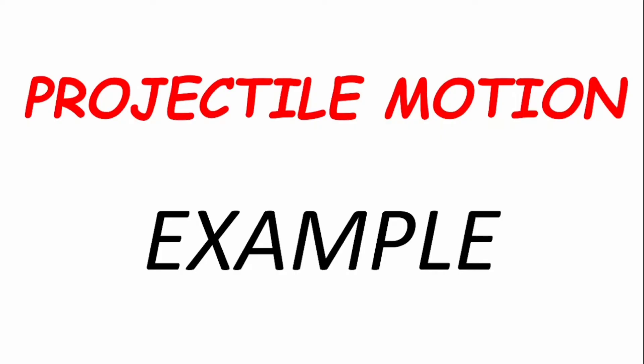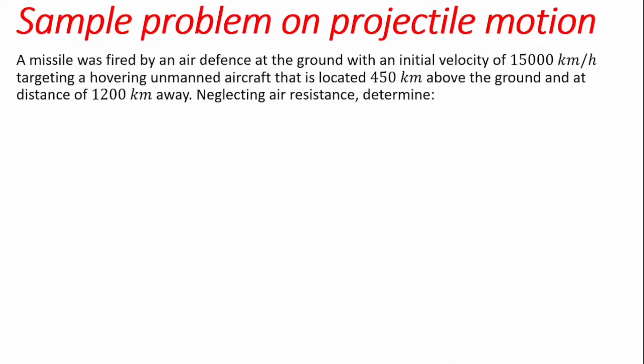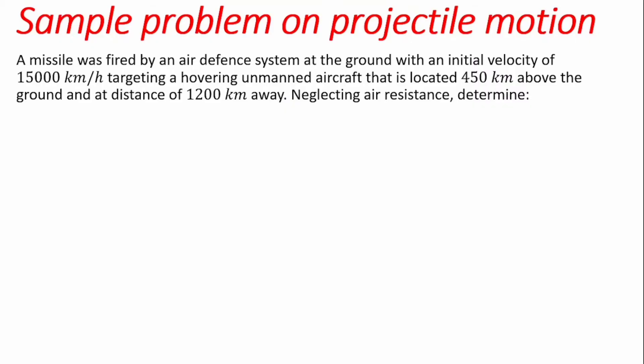Hello, welcome to Oye Re Solution channel. In this video I'm going to present an example that describes projectile motion. We're going to walk through this problem: a missile was fired by an air defense system at the ground with an initial velocity of 15,000 kilometers per hour, targeting an overing unmanned aircraft.